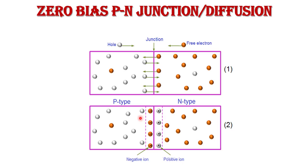When an electron combines with a hole on the p-side, the atom which accepts this electron loses its electrically neutral status and becomes a negative immobile ion. As seen in the diagram, due to this recombination process a large number of positive immobile ions accumulate near the junction on the n-side, and negative immobile ions accumulate on the p-side near the junction. After some time the diffusion stops, and the junction reaches an equilibrium condition.